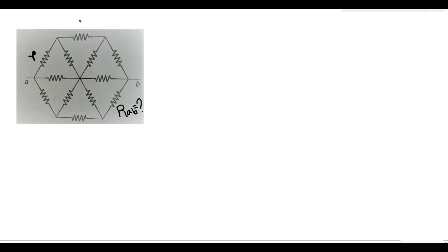Say there is an axis — this is point C and D — and it goes through the center point O. If we see the symmetry about this axis, there is mirror symmetry: if we consider a mirror along the line CD, then the left-hand side and the right-hand side are mirror images of each other.